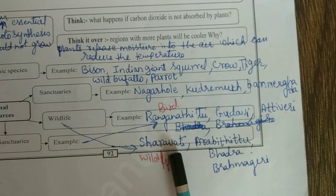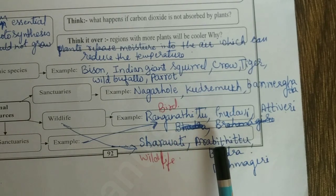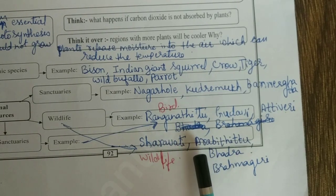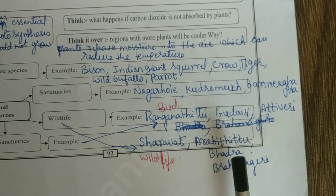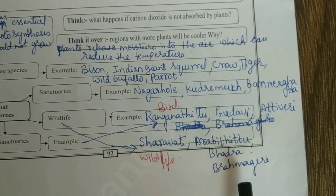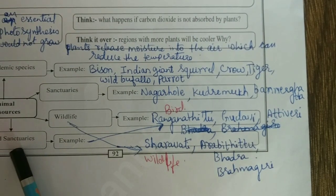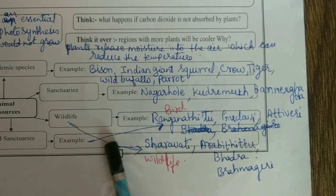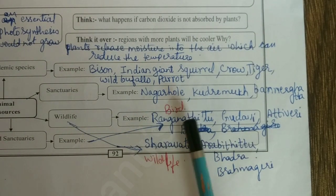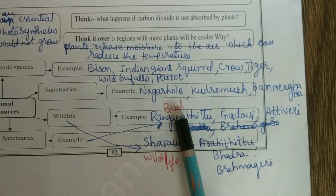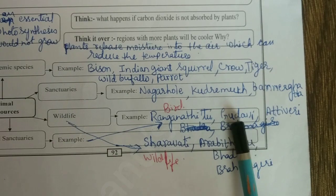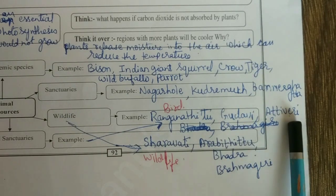Wildlife sanctuaries: Sharavati, Arabithittu, Bhadra, Brahmagiri. Bird sanctuary examples: Ranganathittu, Gudavi, Attiveri.